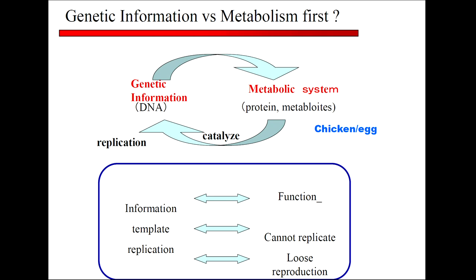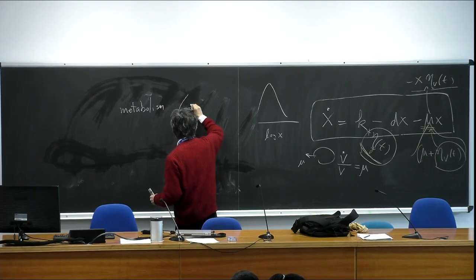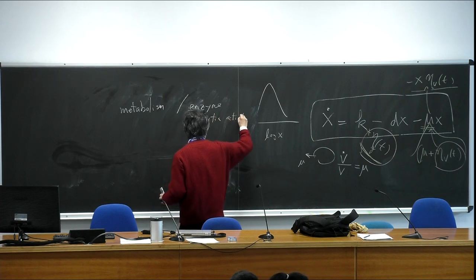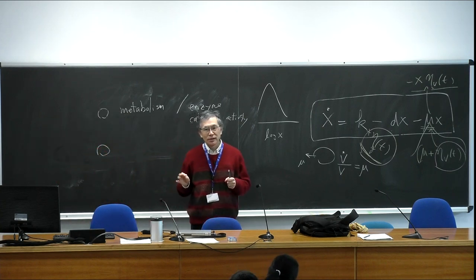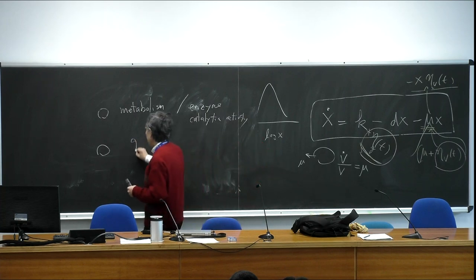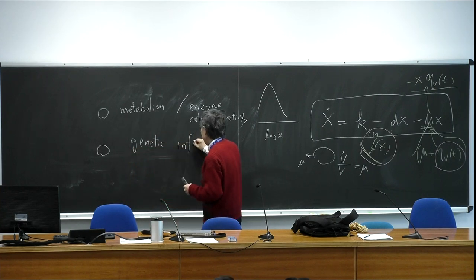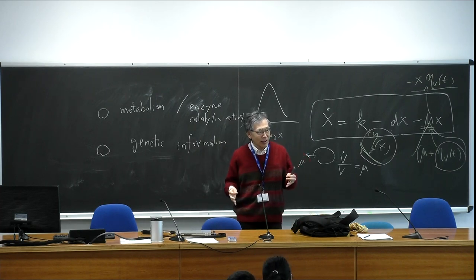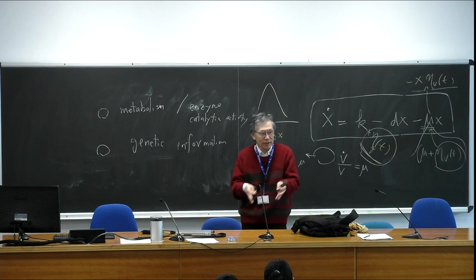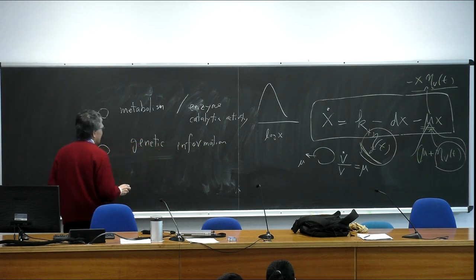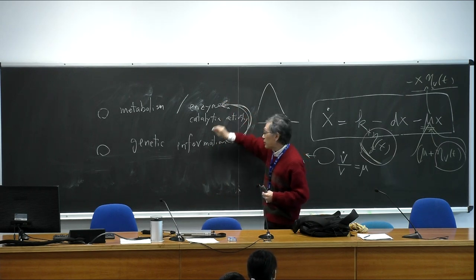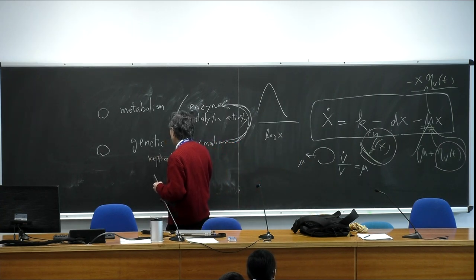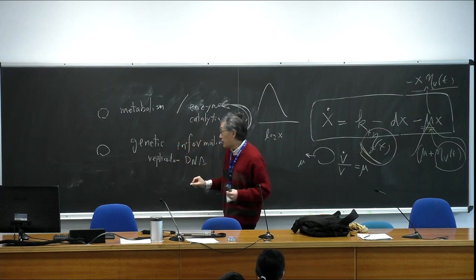Yesterday you heard about the central dogma. In this biological system there is some metabolic process — enzymes make energy and keep the cell state for growth. That is metabolism. For metabolism to get energy, you need enzymes with catalytic activity. But there is another important issue: genetic information. Currently cells have DNA, and from that, information is transferred to the next offspring. Genetic information is necessary to produce enzymes, as you heard in the central dogma.